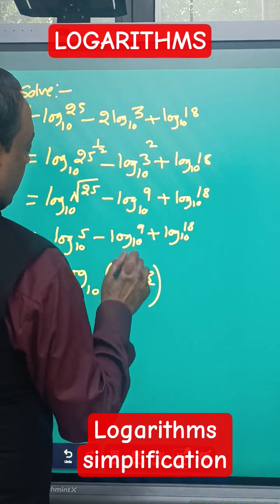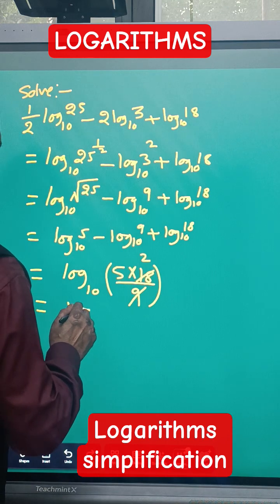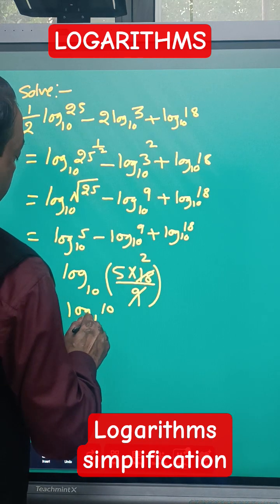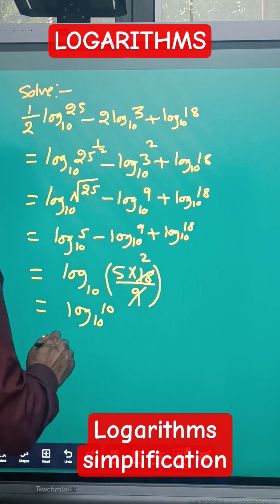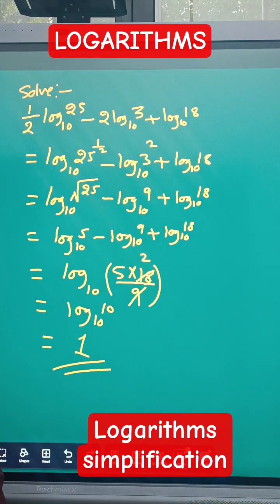9 goes into 18 and 5 times 2 is 10, so now we have log 10 to the base 10. Now log 10 to the base 10 is equal to 1, so our final answer of this sum is equal to 1.